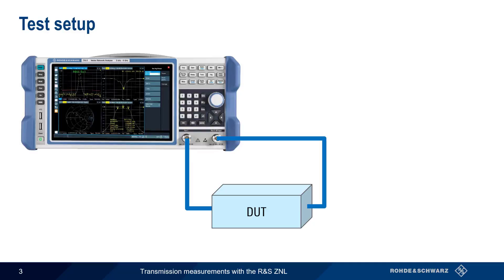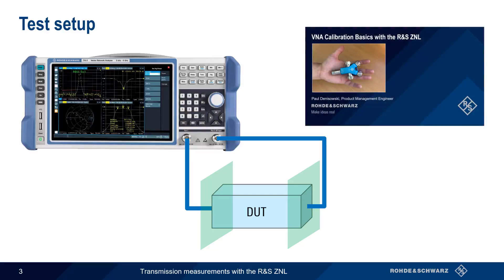Normally, we would want to calibrate our VNA before making measurements, with the DUT ports being the reference or calibration plane. But in this presentation, we'll assume that we already have a valid calibration. If you'd like step-by-step instructions on performing a calibration, please see the presentation VNA Calibration Basics with a Rohde & Schwarz ZNL.